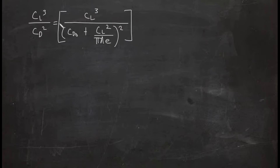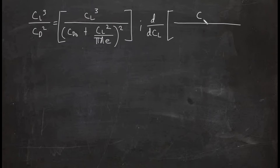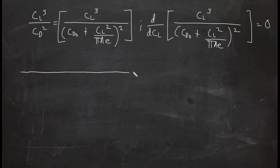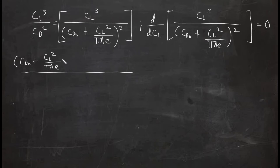We will get the first derivative and set it to zero. We take the derivative with respect to CL, since CL is the independent variable. Using the quotient rule: the denominator is (CDo + CL²/(πAe))², and we get the derivative of the numerator.